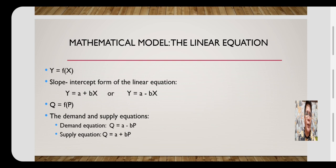The linear equation y is equal to a plus bx or y is equal to a minus bx is the slope-intercept form of the linear equation. Since we no longer make use of y and x to represent the dependent and the independent variable, we will now make use of quantity and price — q and p — to represent the dependent and independent variables, respectively.